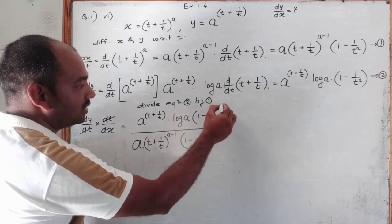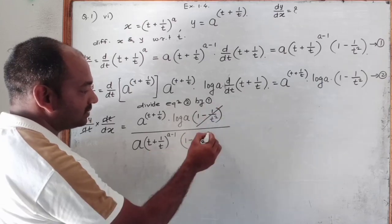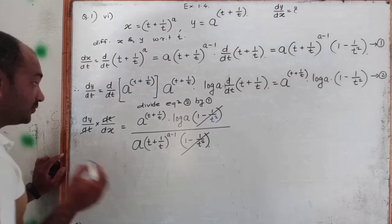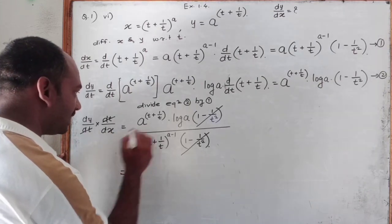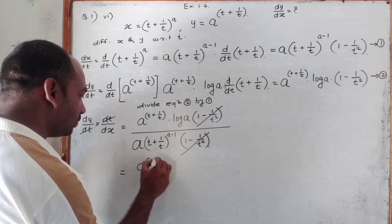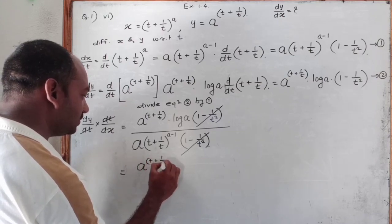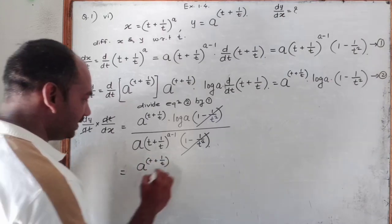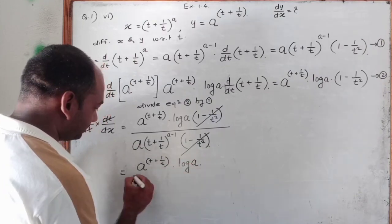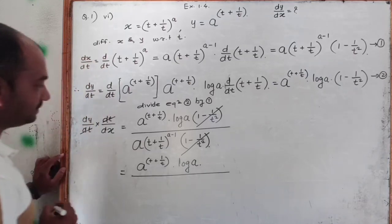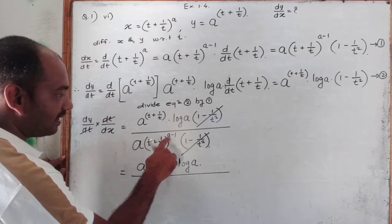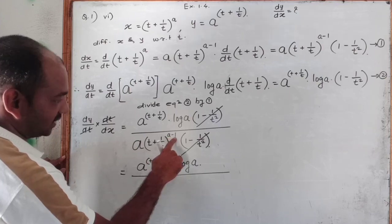After cancellation, this part we write as it is — that is a raised to t plus 1 upon t, into log a — divided by the denominator. Now see, this power is a minus 1.